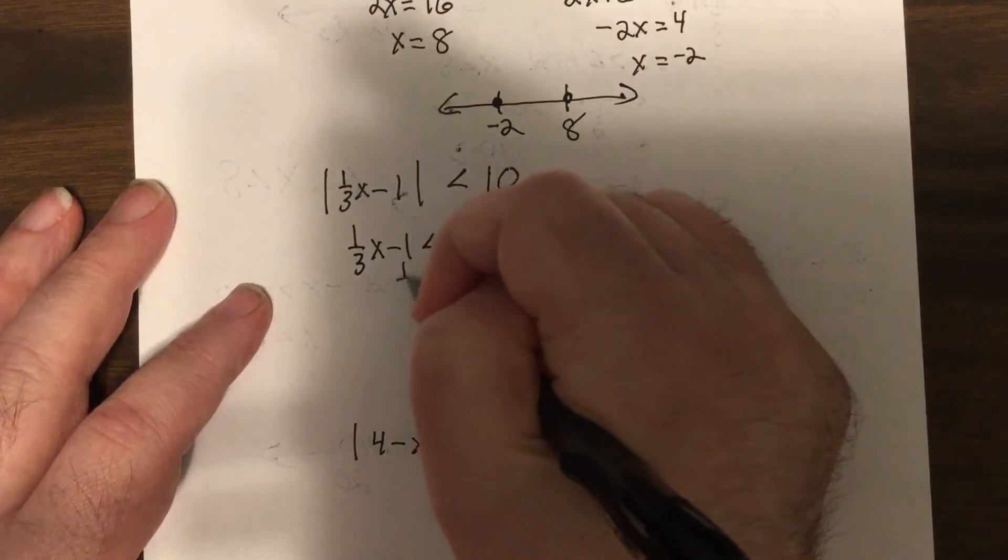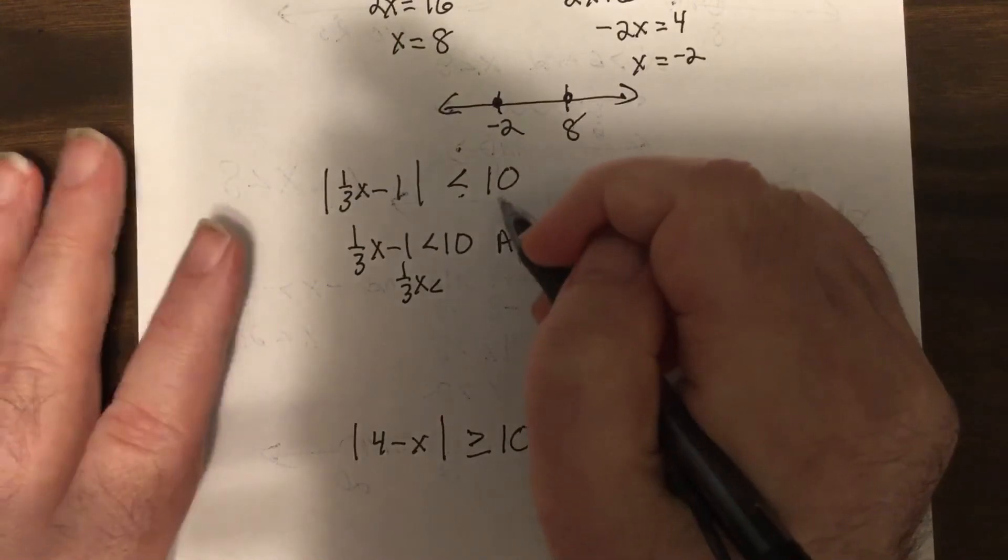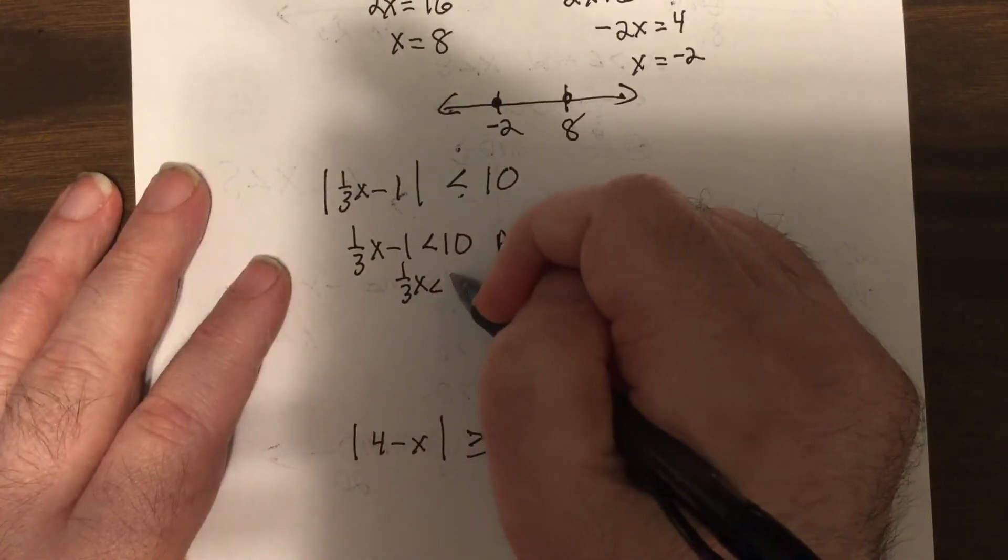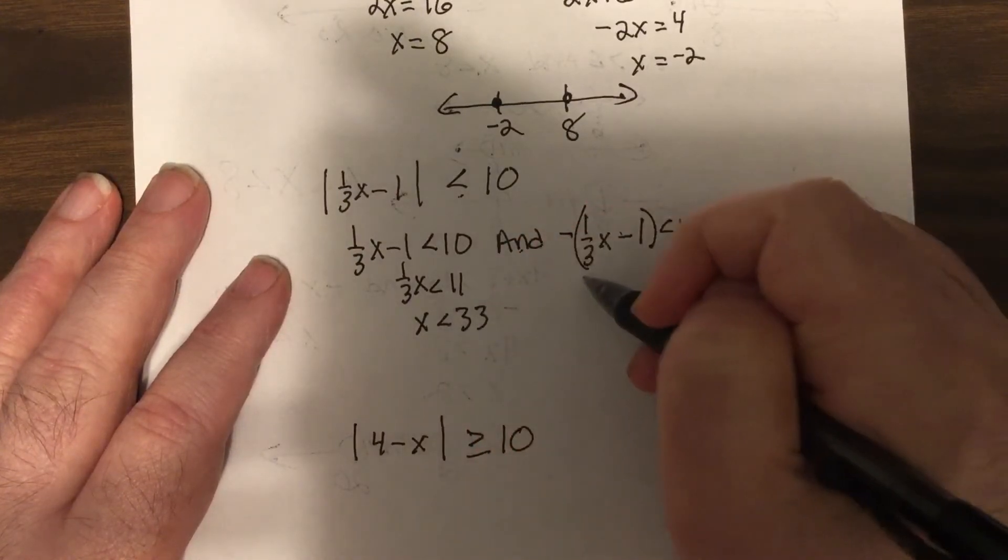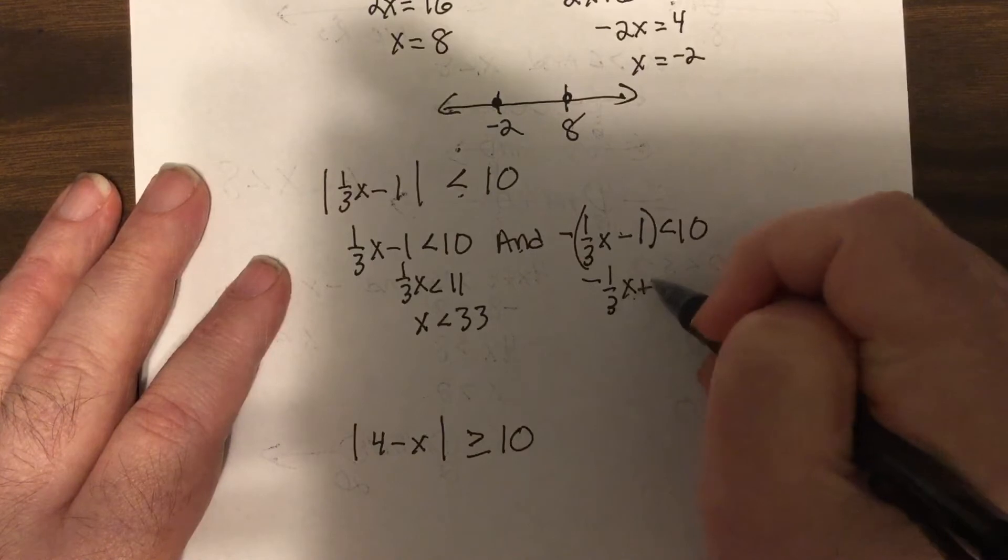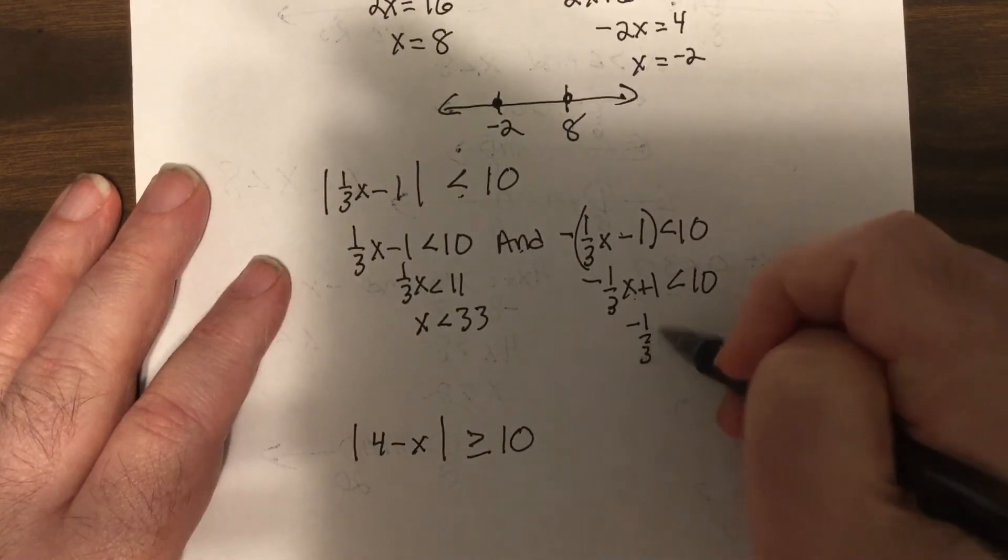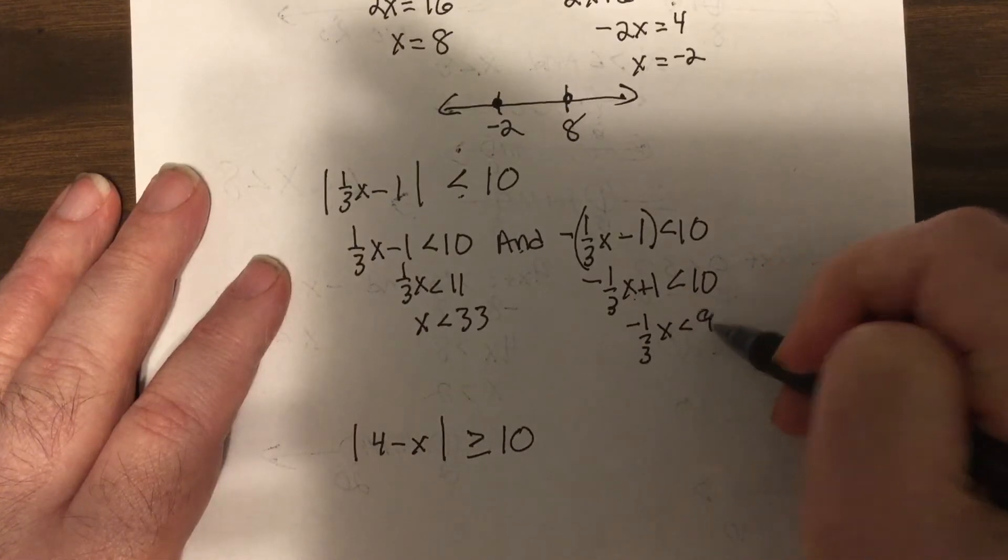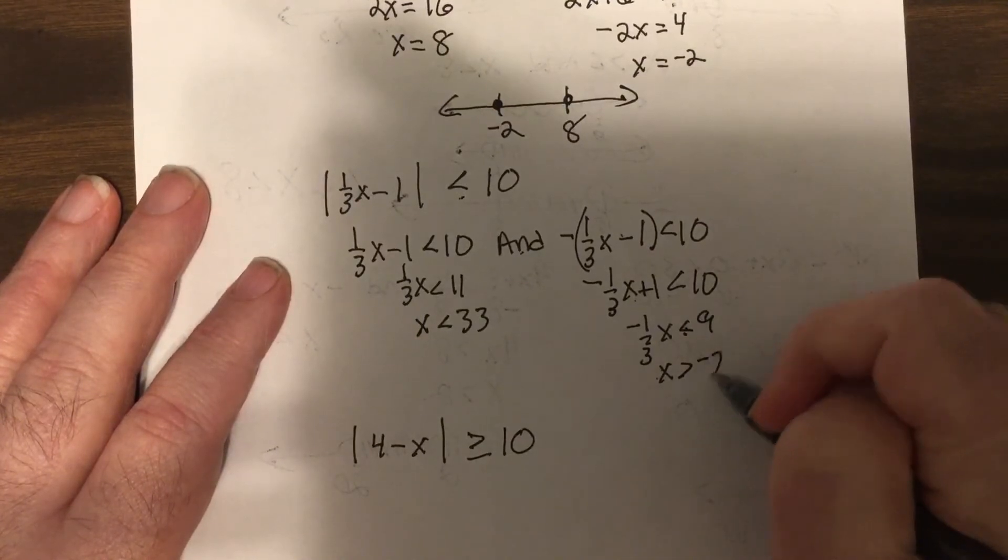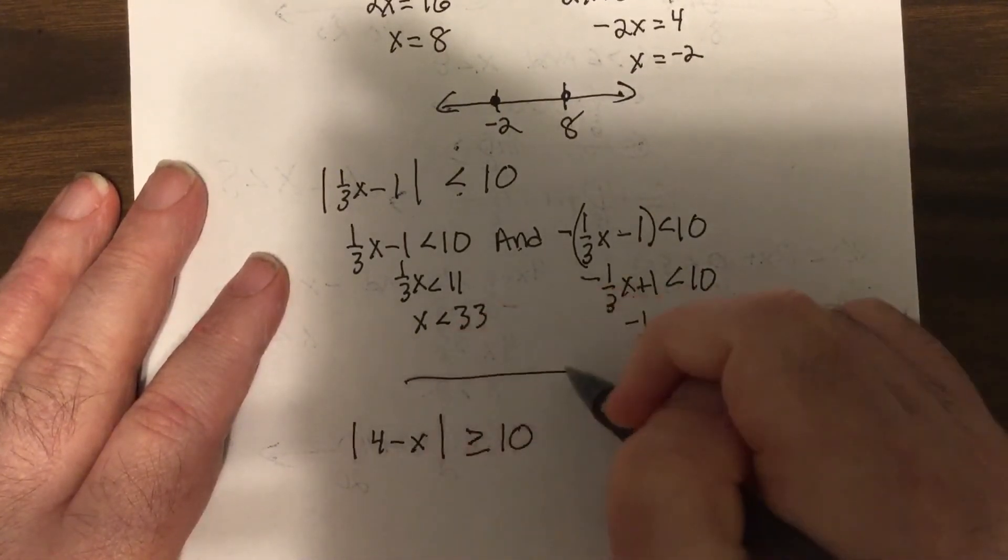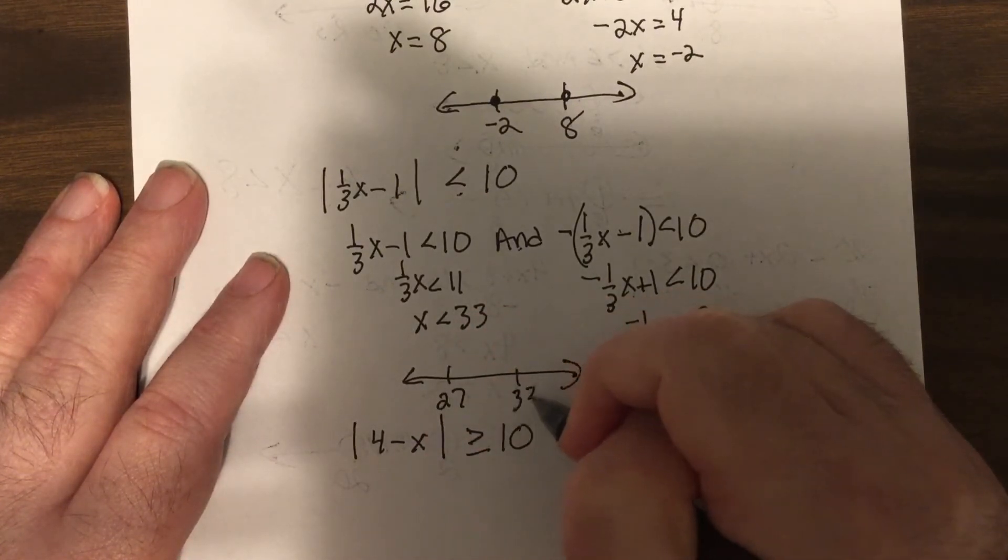So we would add 1. Less than is always 'and', and you're coming towards the middle. Multiply by 3. Here distribute the negative, subtract 1, multiply by negative 3, switch the inequality when we multiply by negative. So it'd be everything between negative 27 and 33.